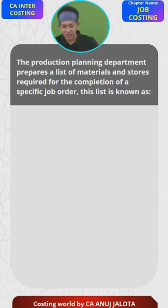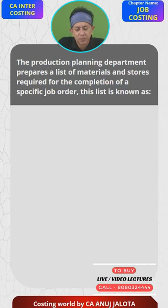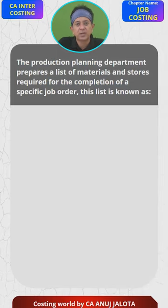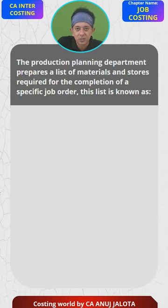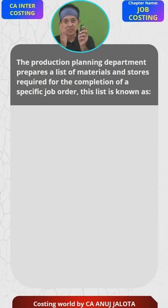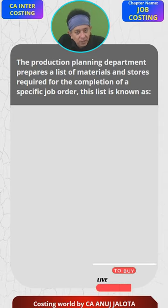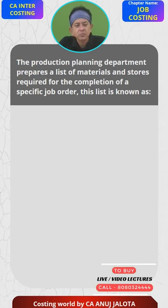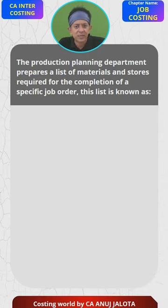The MCQ for today is: the production planning department prepares a list of the materials and stores required for the completion of a specific job order. This list is known as what? Before exploring the four options, let's understand what this question means.